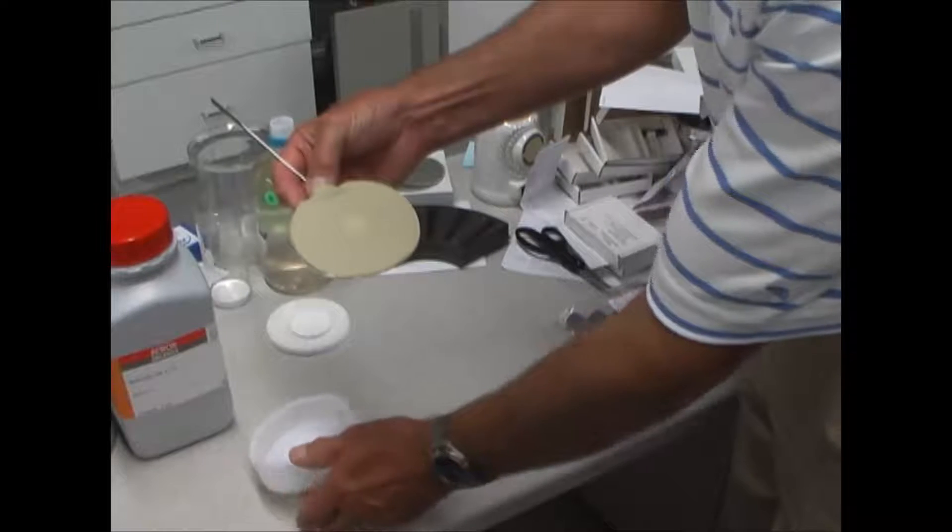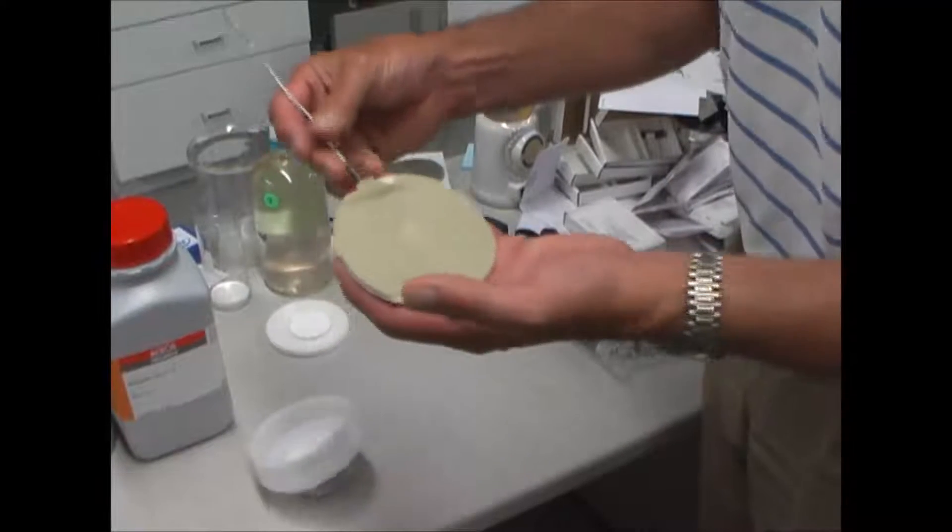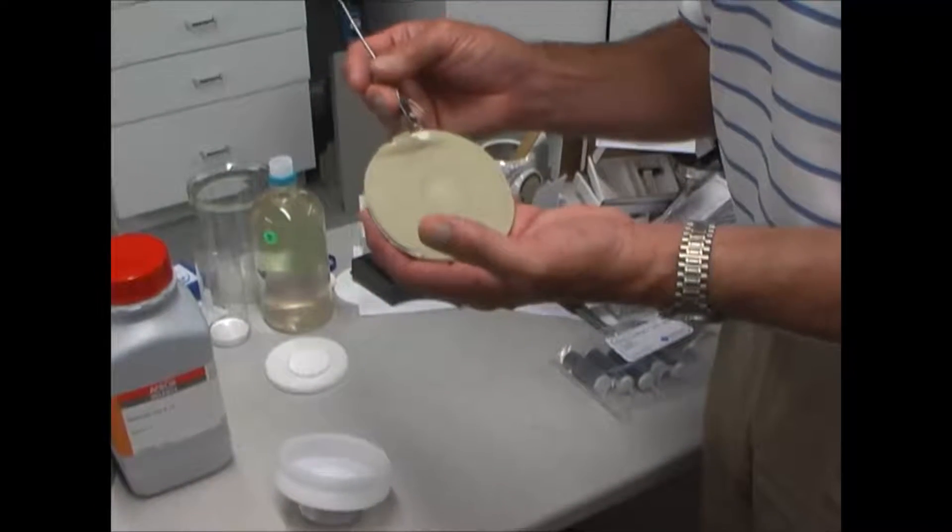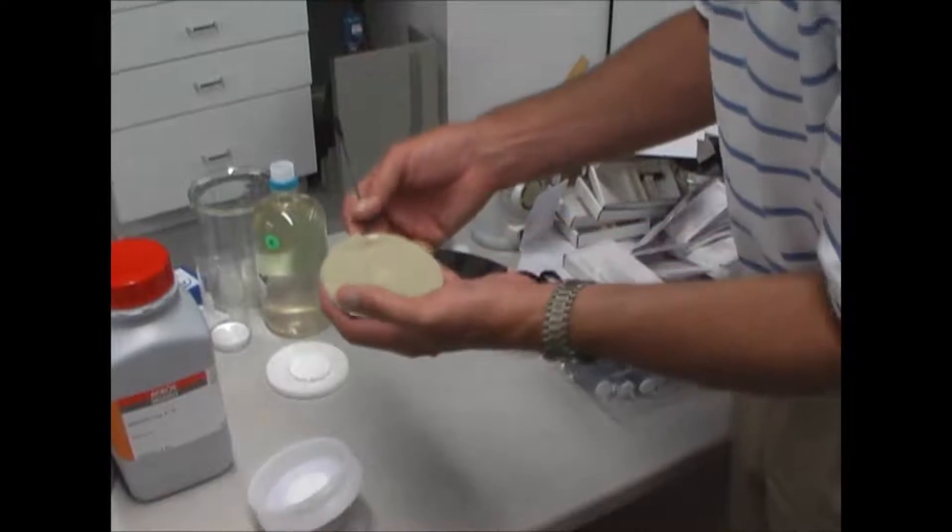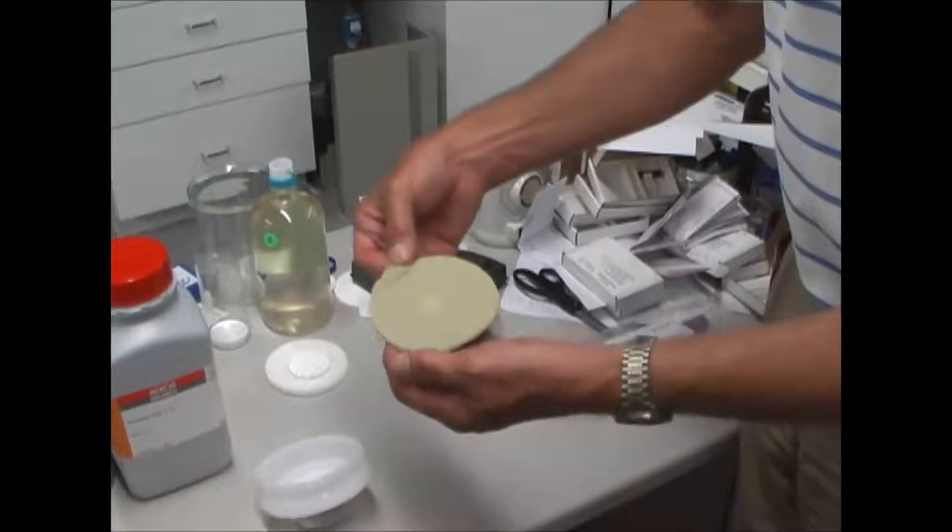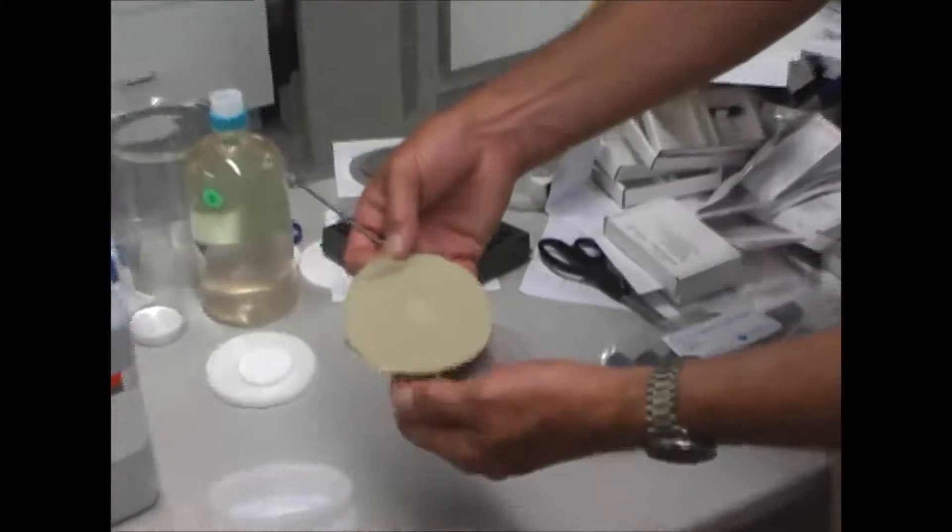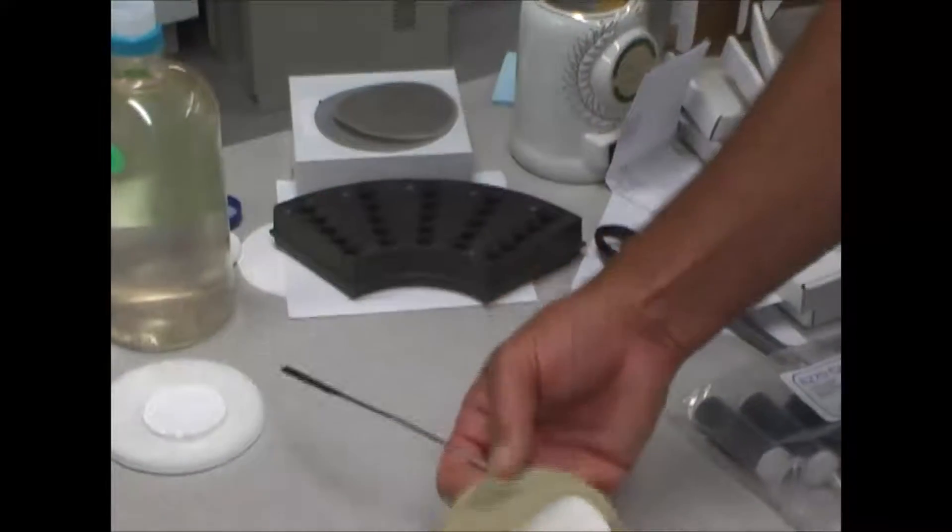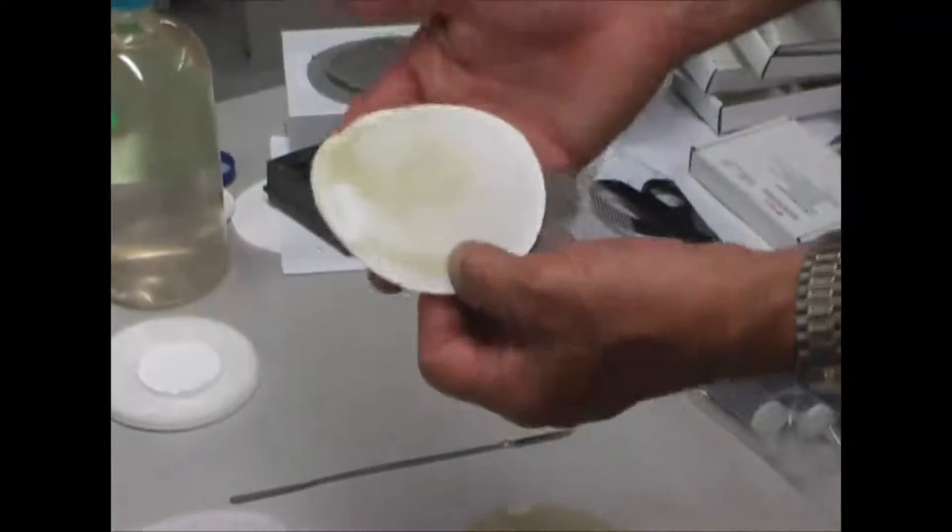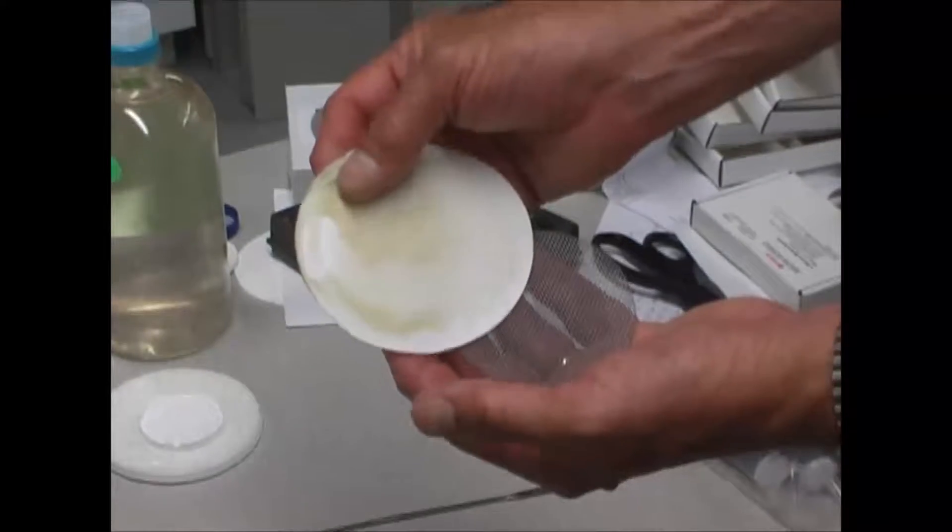So let's separate these pre-filters first. On the top is the five micron. We can see most of the clay held on that disc. The one micron underneath is fairly clean.